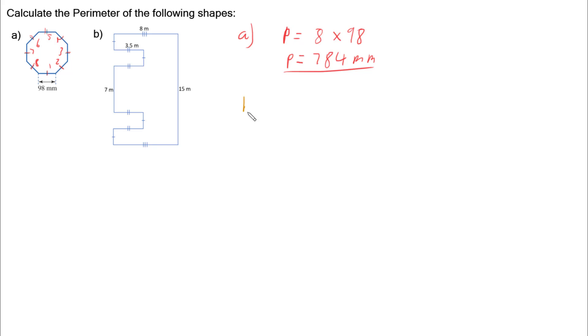Part B is a little bit trickier. We have a similar concept where we've got tick marks, single tick marks here. So these one, two, three, four sides are all the same. But we've also got double tick marks and that means anything with two tick marks is all the same. And then we've got three tick marks, which means these two are the same.